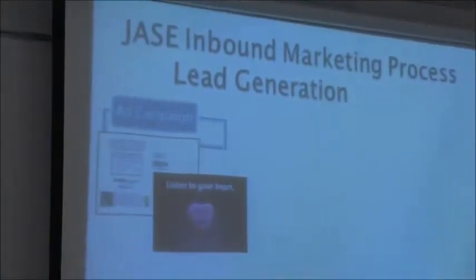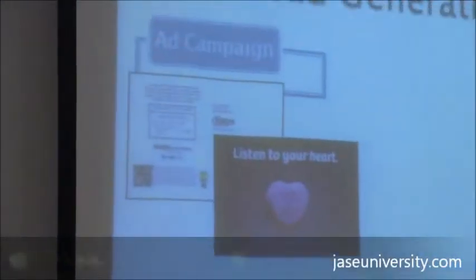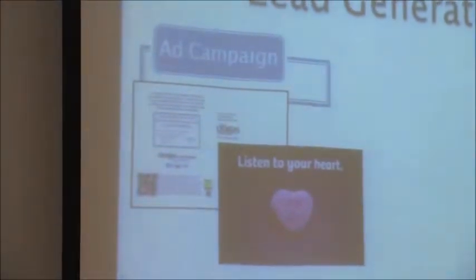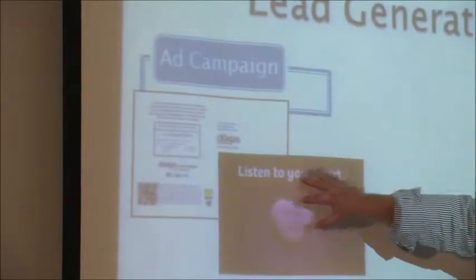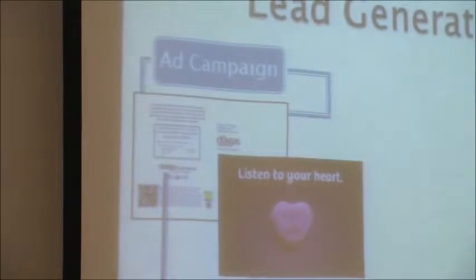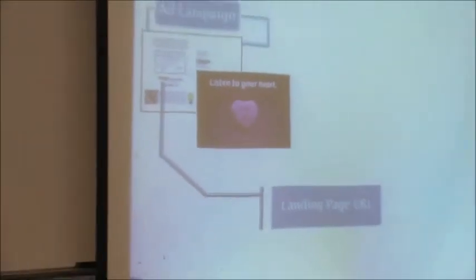Let's walk through the actual process using the direct mailer as an example. I know this is an inbound marketing class, but I wanted to help you tie the offline world with the online world. The mailer targeted renters in the area — people who could afford an $1,100 a month mortgage because they were already paying more than that in rent — so coming up with a URL like 'My Landlord Is Crazy' just made sense.